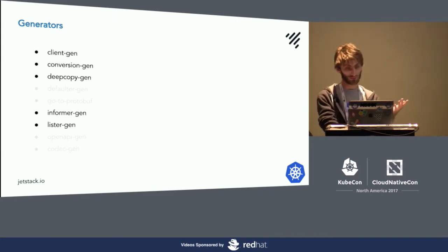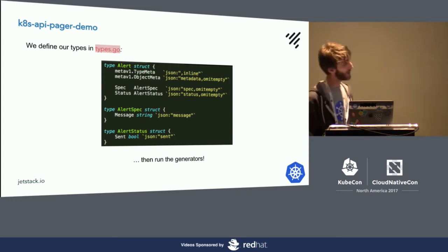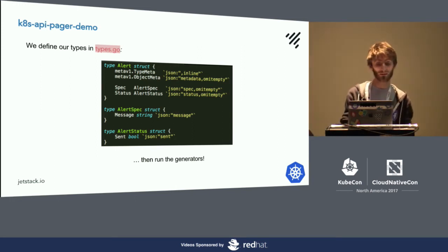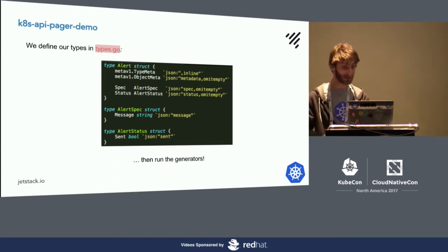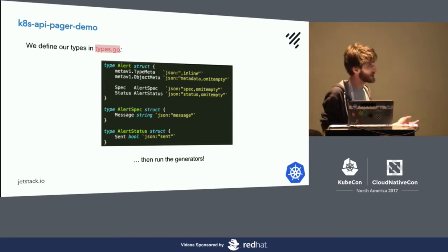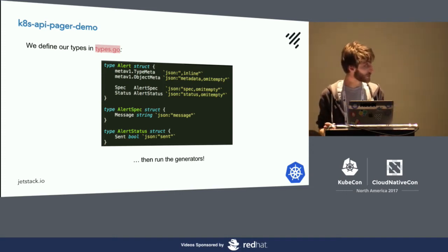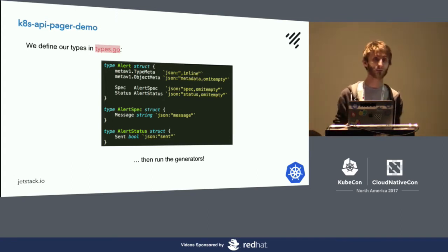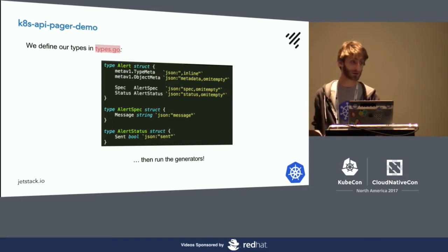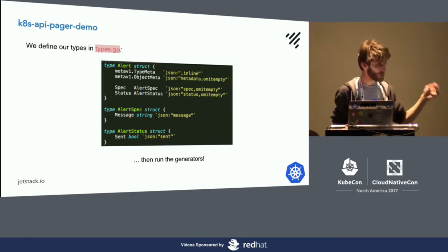So what have I used to do this? I've used the client generator, conversion generator, deep copy generator, informer, and lister. We've defined our types like this: we have our type Alert with standard metadata blocks, type metadata, then a spec and a status — just like you see with other Kubernetes types. This is a really simple one — we have our message as part of the spec, and then the status records a boolean: whether or not the message has already been sent. Because these types will persist in the API — we have a declarative API in Kubernetes — they don't just go away afterwards.